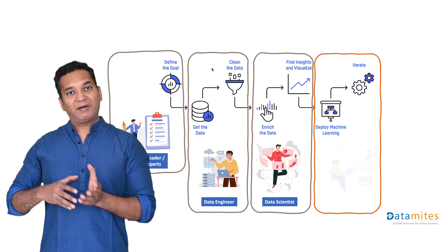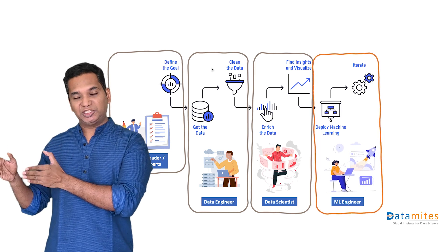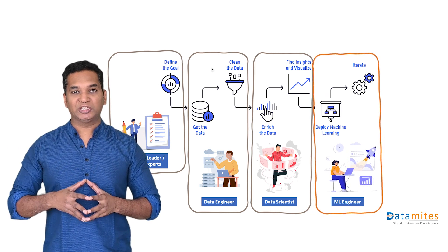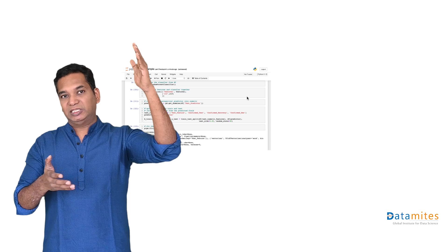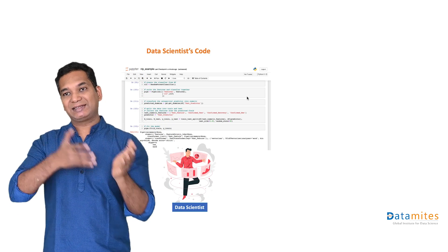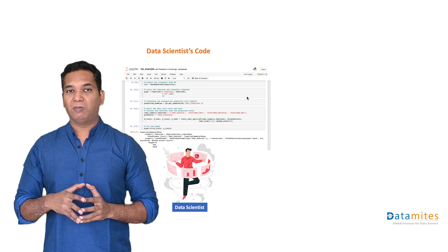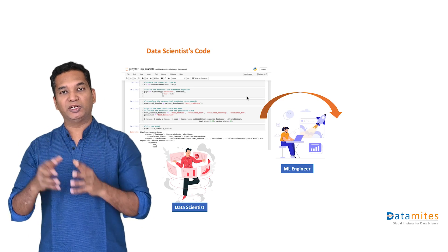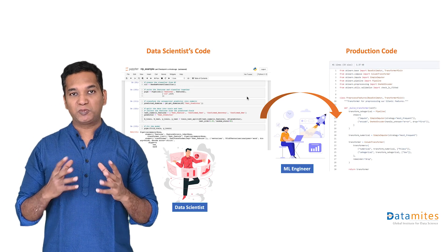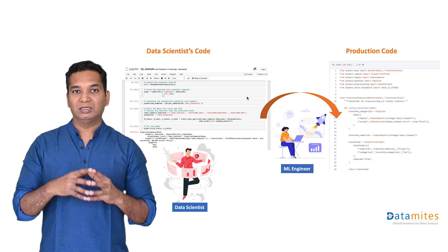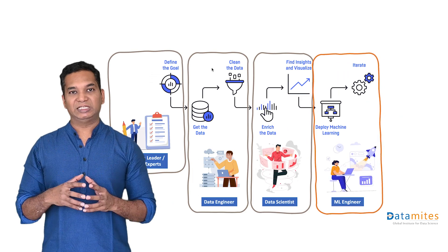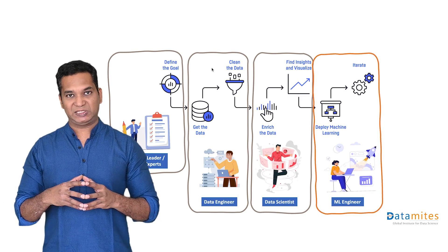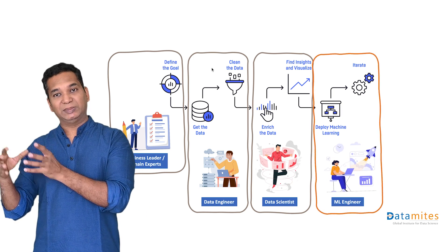That's where the ML engineer comes into the picture. An ML engineer is essentially a software engineer with machine learning knowledge who translates or transforms this experimental code into production-ready code. They convert it into structured, object-oriented code, managing exceptions, exception handling, memory management, and creating the different files for automated deployment. Then they deploy and maintain the model.